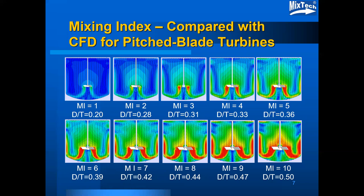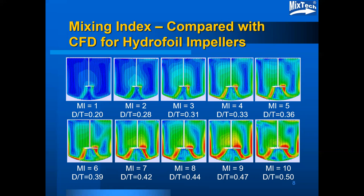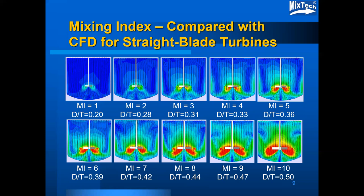As you can see, there are differences in the CFD plots at the different intensities, but in many cases there are no striking differences — most of them are subtle and subject to some judgmental interpretation. The same range of mixing intensities can be represented for hydrofoil impellers using CFD plots, and the same type of thing applies for a radial flow straight blade turbine with a similar set of results.